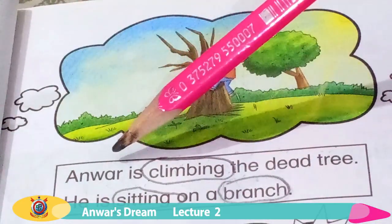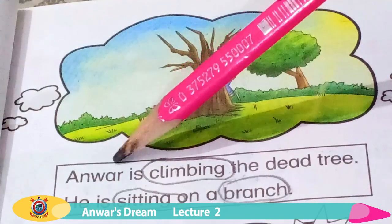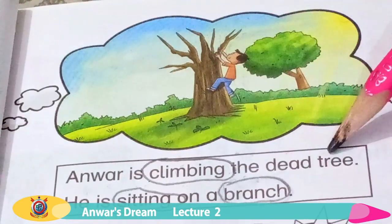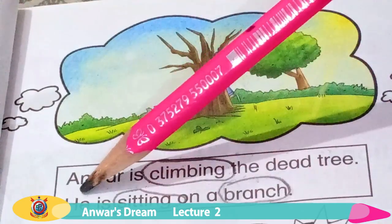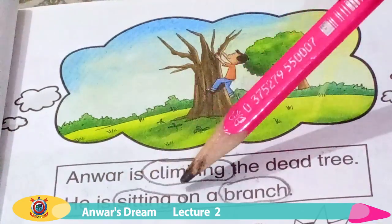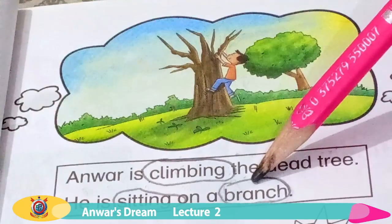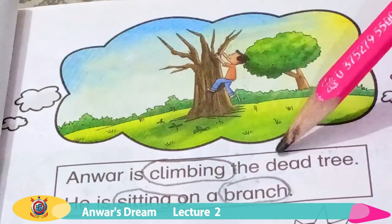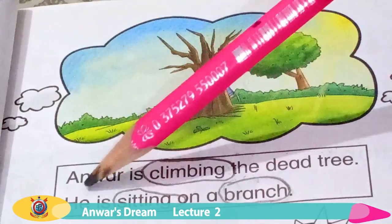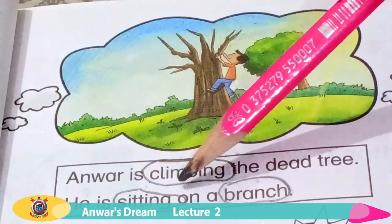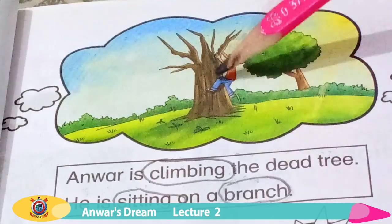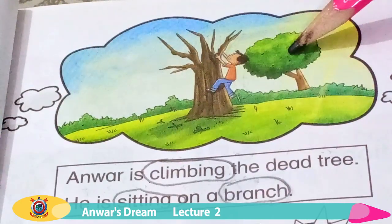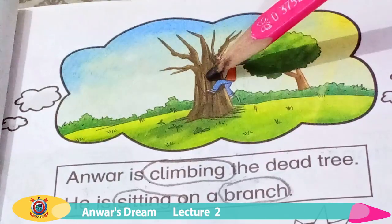Read with me, students. Anwar is climbing the dead tree. He is sitting on a branch. This is a branch. This is a green tree. This is a dead tree.